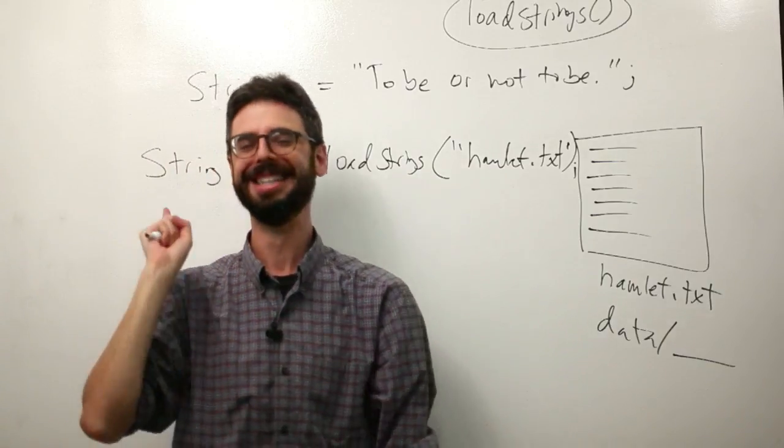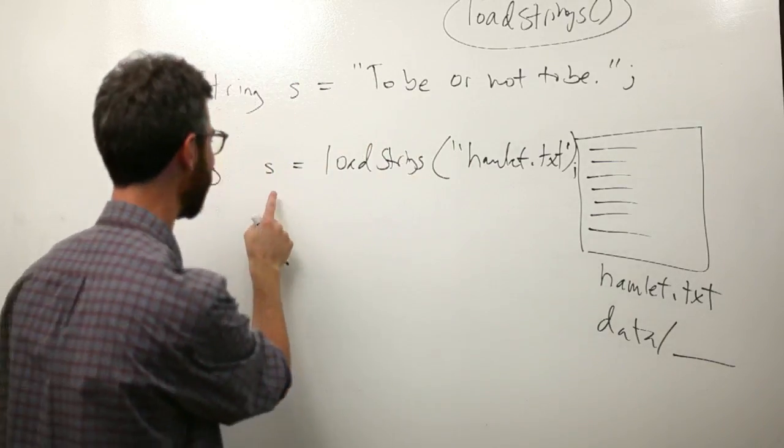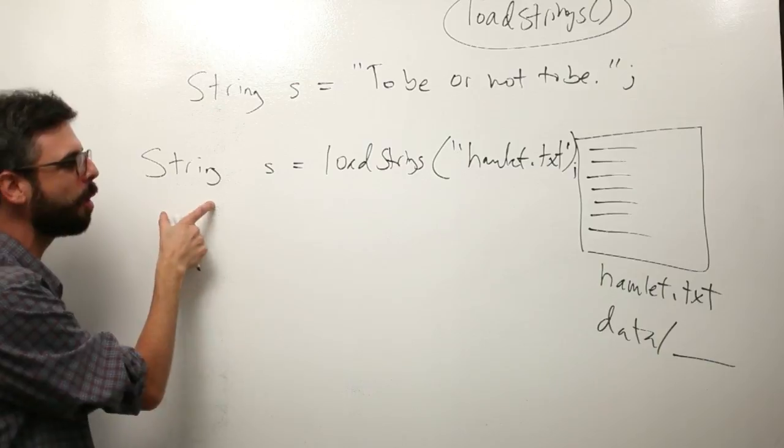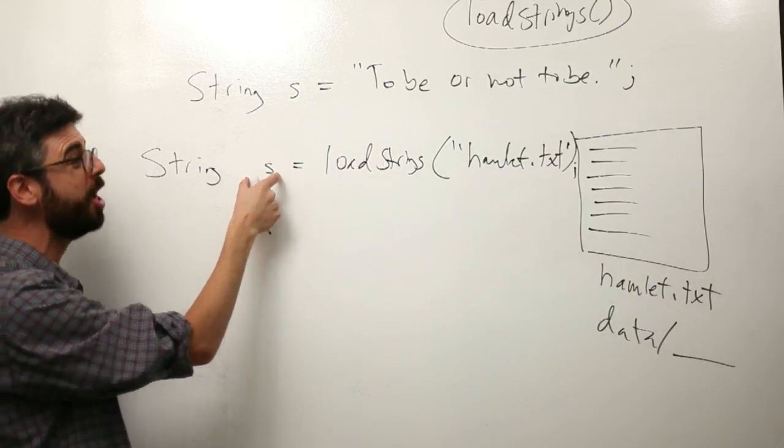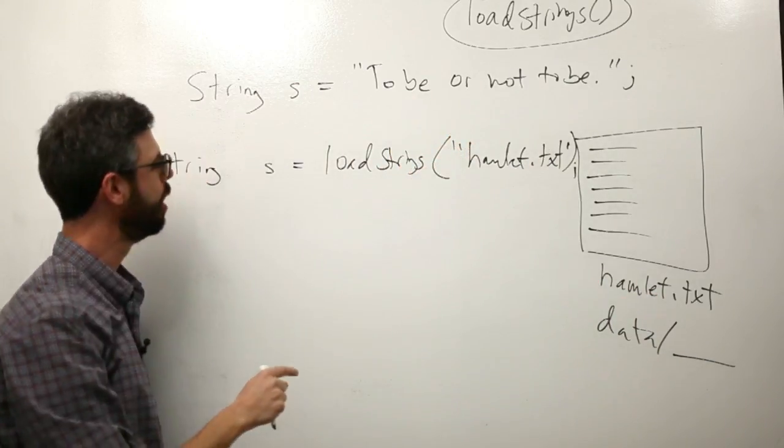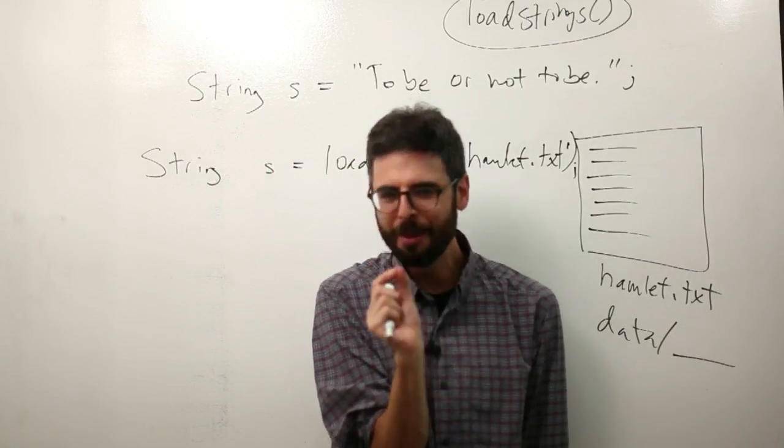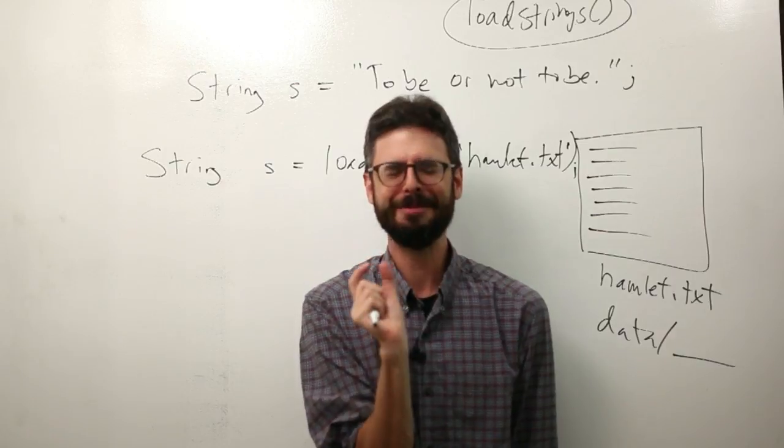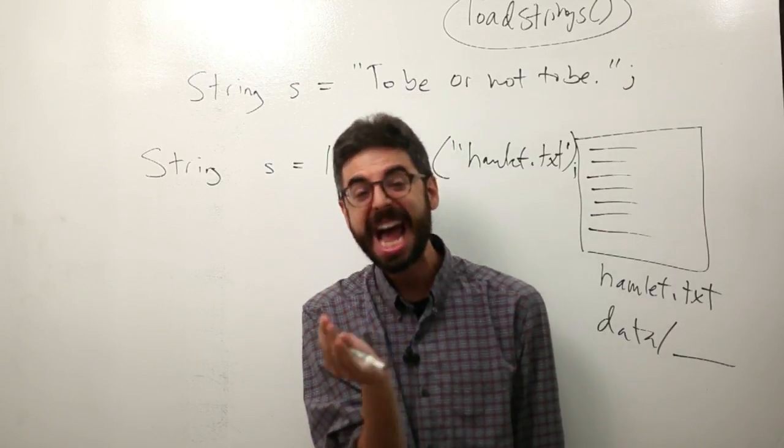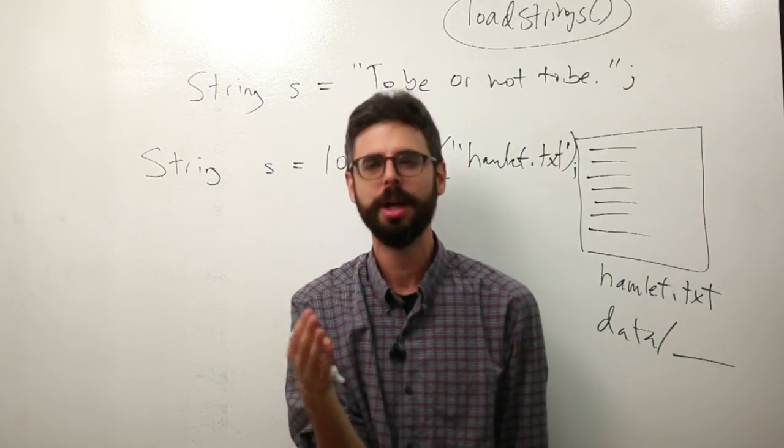So if that file is there I could use loadStrings and I've got it and now it's in my string. Only, sadly, this is not exactly right. This is what we're looking for. We want the entire play into a single string so we can split it into words. But loadStrings actually does something slightly different which at this moment will seem rather inconvenient and annoying, but actually it's a useful thing.